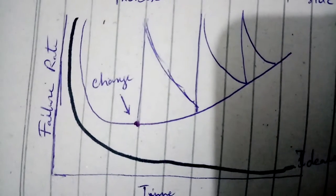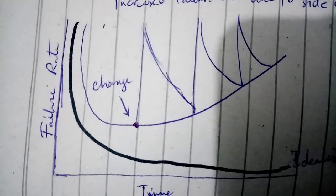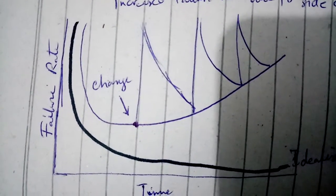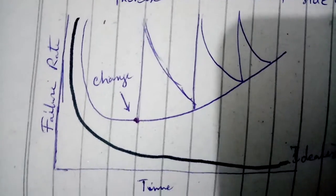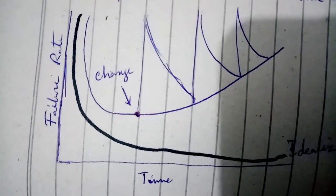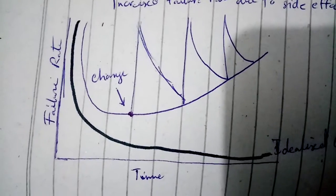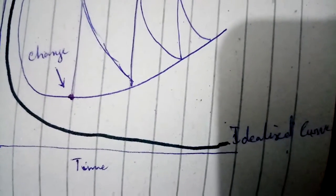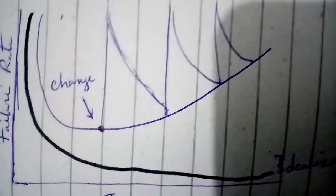At the initial stages there are a lot of bugs when you run or install a software. And as time passes, you can see by continuous maintenance, bugs are less. But this is the idealized curve.